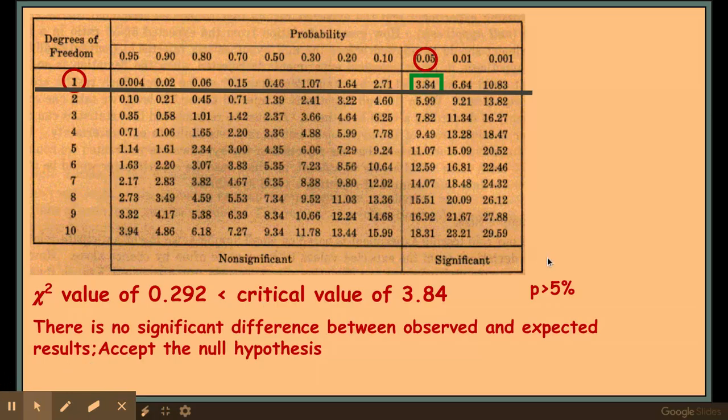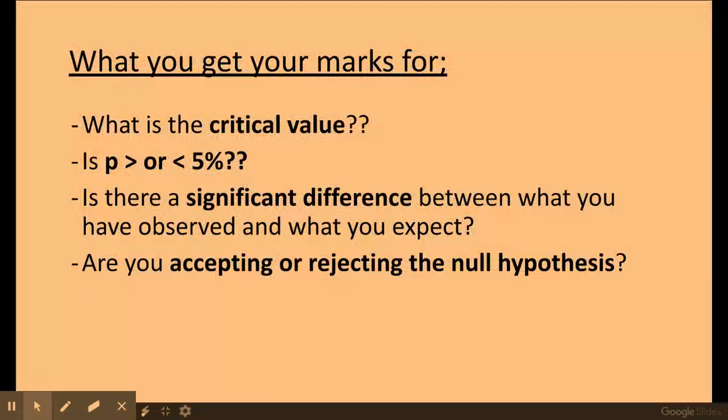We get a mark here for saying that my probability, that the difference due to chance here is greater than 5%, and that there is no significant difference between what I've observed and what I've expected. Therefore I accept the null hypothesis. So this is what you get your marks for.